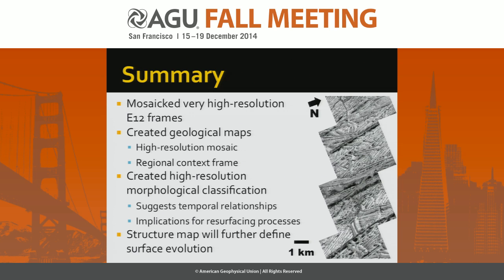Audience question: In some of those linear features, it looks dark in the low-lying areas between the ridges — is that a lag deposit? Response: There is dark material in the low-lying area between the ridges, and it could be a lag deposit, or possibly other things. It's hypothesized to contain salts and other things compared to just the ice around it.